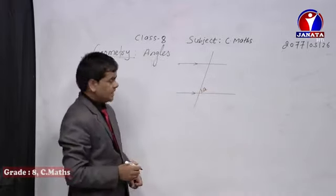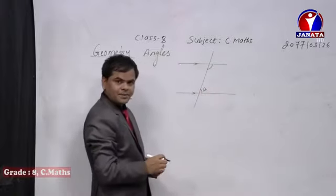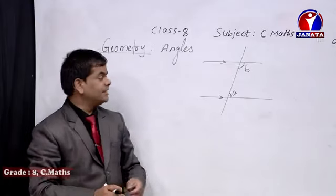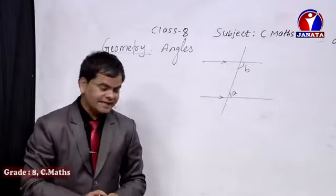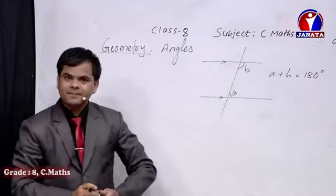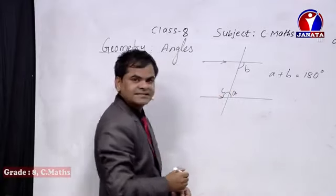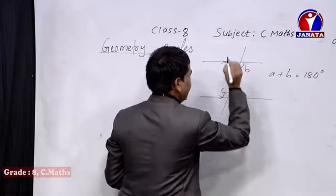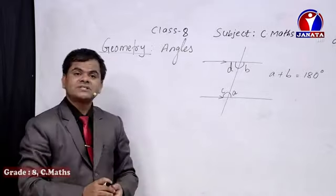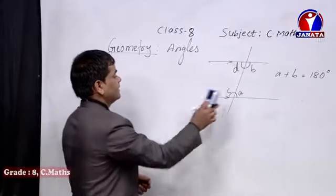Among those angles, we are going to revise. For example, if we are thinking about co-interior angles, then with respect to A, B is known as the co-interior angle. The relation between co-interior angles is A plus B — the sum becomes always 180 degrees. That means A plus B equals 180 degrees, being the sum of co-interior angles. Similarly, if C and D are co-interior angles, then C plus D also equals 180 degrees.